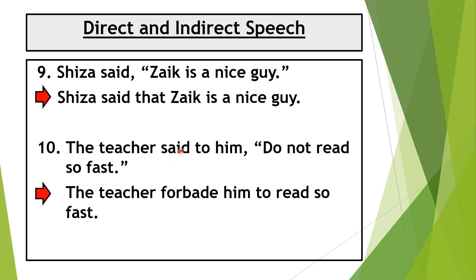The teacher said to him, do not read so fast. This is an imperative sentence showing forbidding. The answer is: the teacher forbade him to read so fast. You can also write: the teacher ordered him not to read so fast.